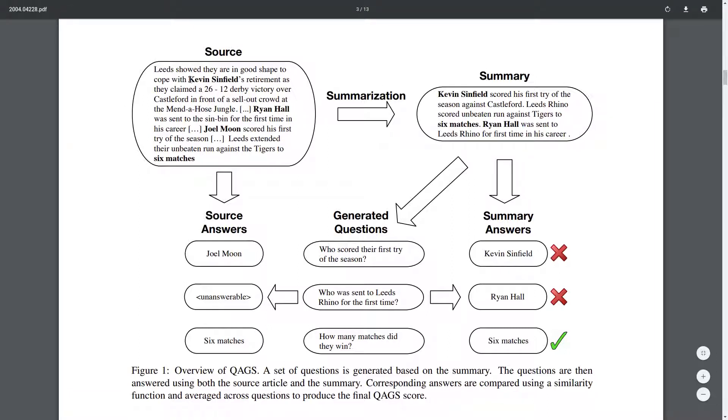For example, about a footballer here called Kevin Sinfield who is playing at Leeds, a football club. He retired or something like that. On the right we have a summary about Kevin Sinfield who scored his first try of the season against Castleford and so on. This is a system-generated summary.